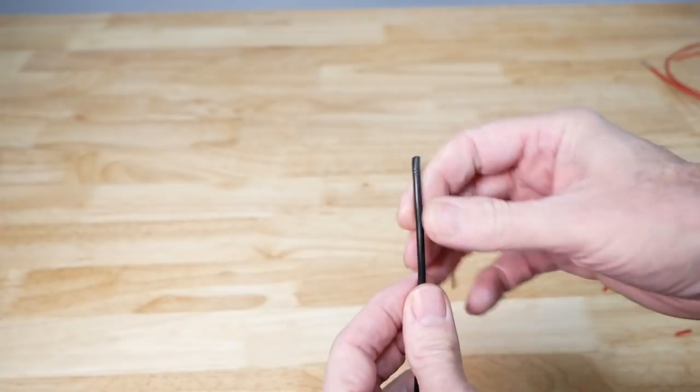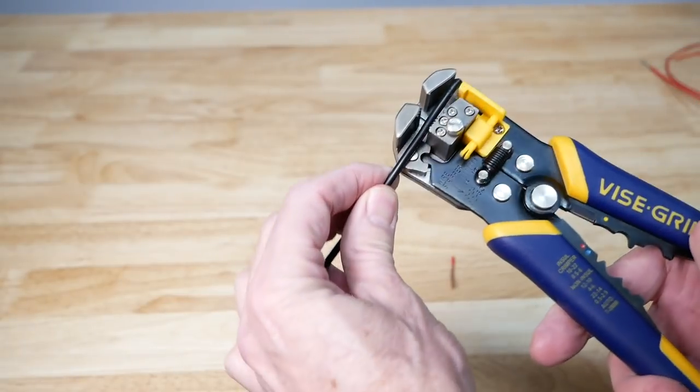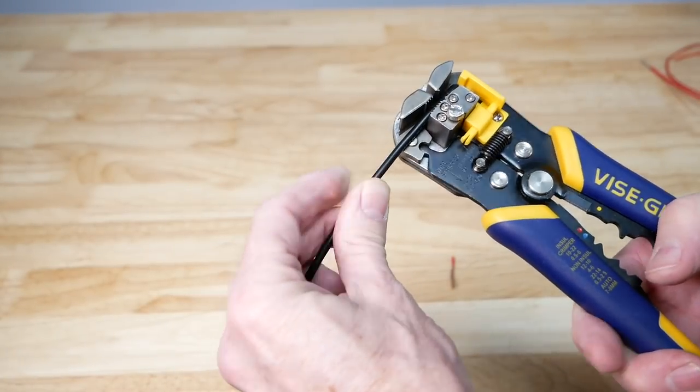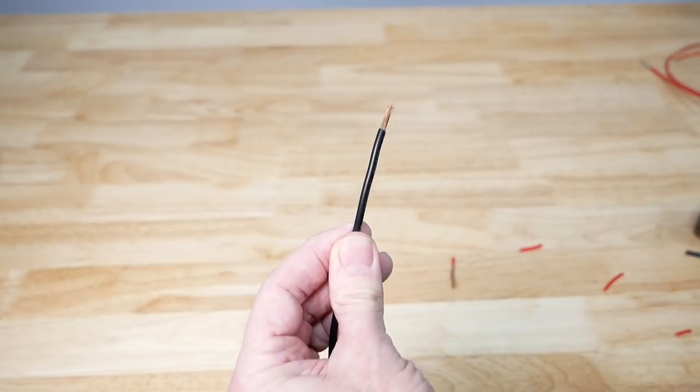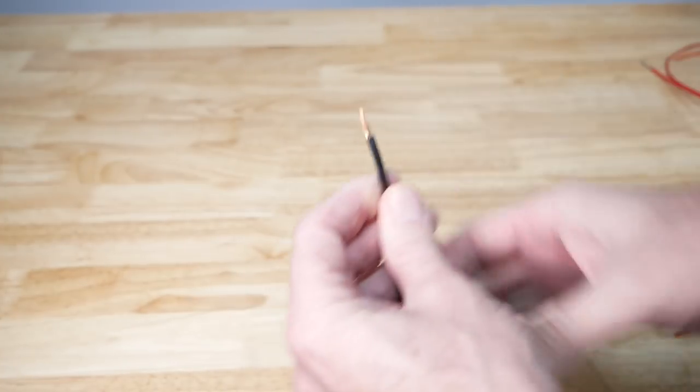Now it also works on some thicker wire. This is a 12 gauge. Here you can see, trims it off no problem. These are all stranded wires, but if you have solid core wires, it works as well too.